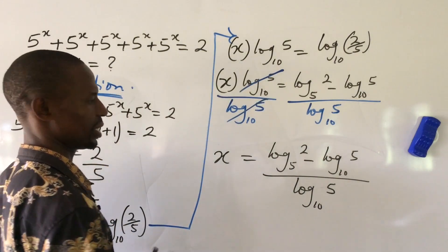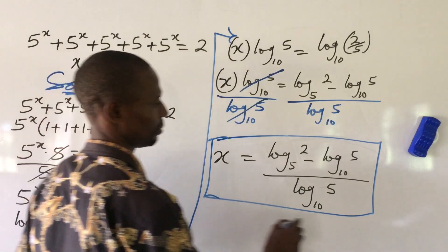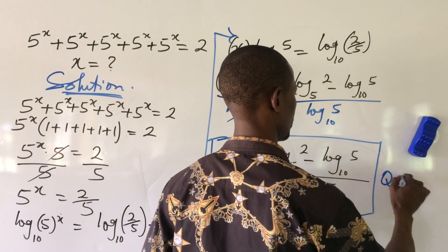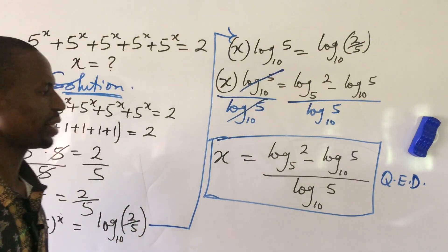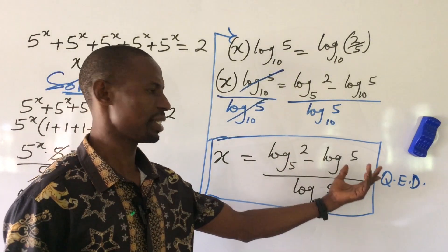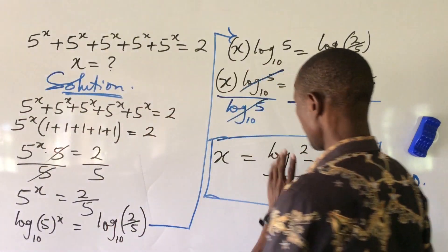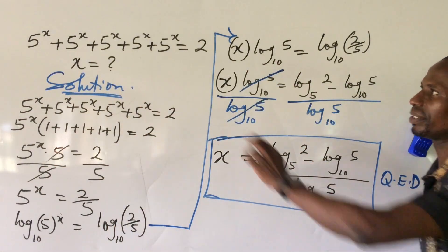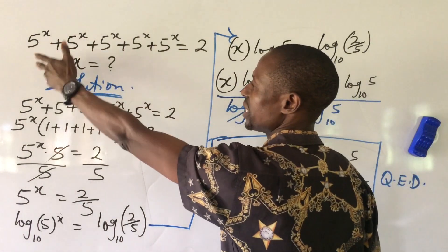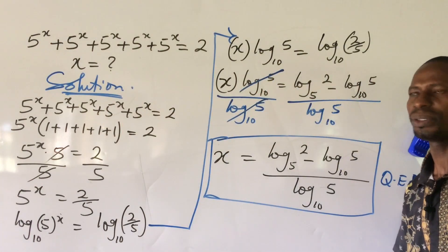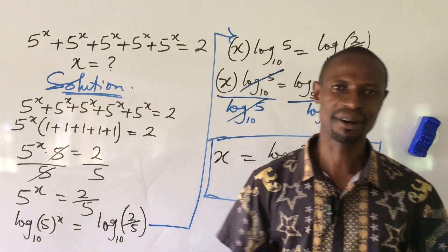So this is the value for our x. QED. You can also simplify this further using a calculator. If you put the numerical values in and sum up everything, it will give you an approximate decimal value of this expression.